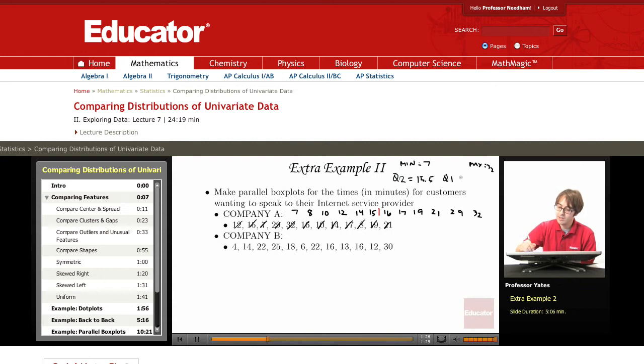And Q1 is going to be the median of the lower half of the data. So the median here of the lower half is between 10 and 12. So Q1 is going to be 11, and Q3 is going to be 20, because we're looking at the median of that upper half of the data.